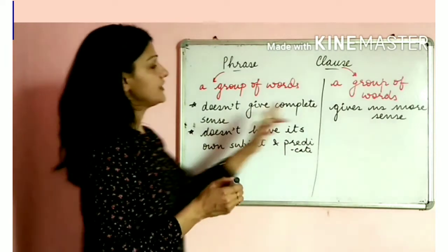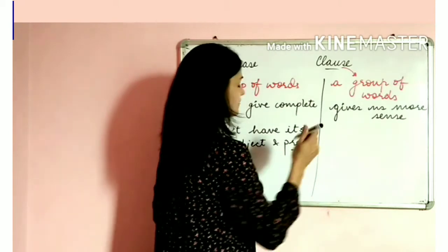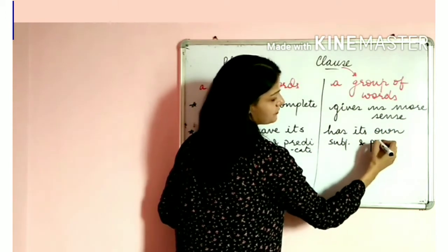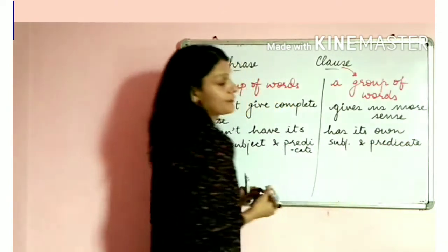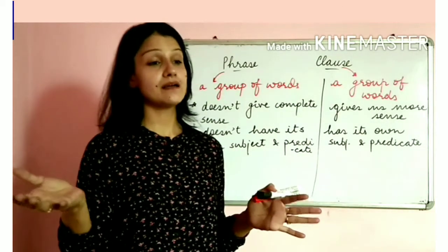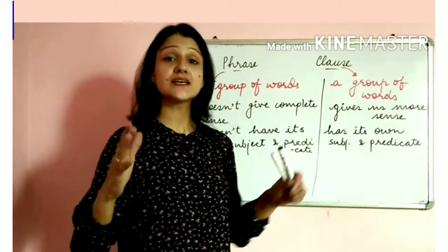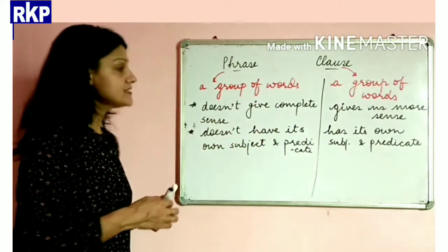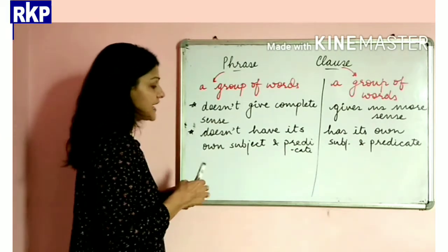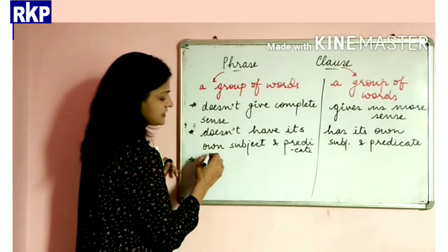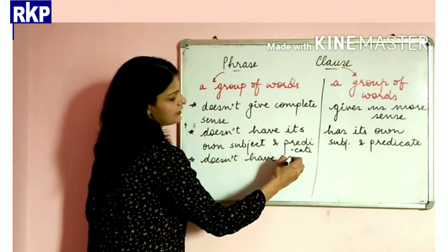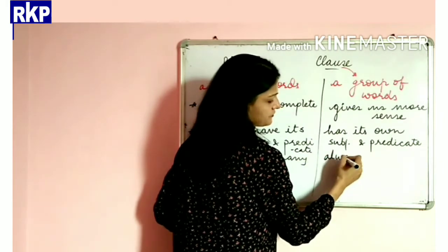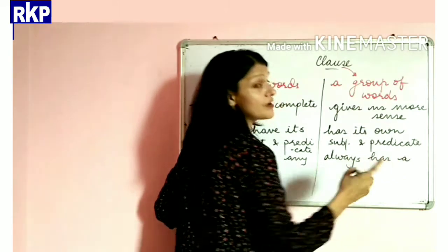A clause, on the other hand, has its own subject and predicate. For example, in 'they are reading a story book', 'they' is the subject and 'are reading a story book' is the predicate. The last and very important difference: a phrase does not have any verb, whereas a clause always has a finite verb.